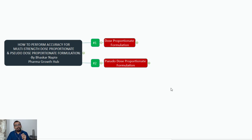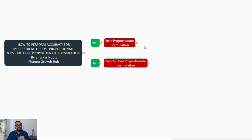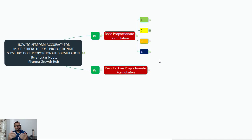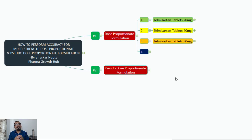Let us begin with the case where your formulation is a dose proportionate formulation. What is meant by dose proportionate formulation? It means that across the different strengths, your excipient-to-API ratio is going to remain constant — one and the same. That situation is called a dose proportionate formulation. Let us take an example using Telmisartan tablets: 20 mg, 40 mg, and 80 mg — three different strengths of the product.